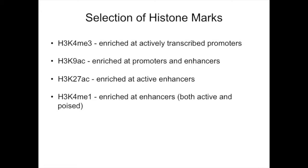For this process we focused on four different histone marks: H3K4ME3, K9 acetylation, K27 acetylation, and K4ME1. Each has slightly different properties — for example, H3K4ME3 is known to be enriched at actively transcribed promoters, whereas H3K27 acetylation is usually enriched at active enhancers.